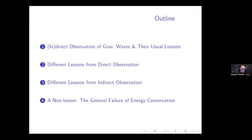Roughly speaking, direct detection involves an interaction between a gravitational wave and a detector on Earth, whereas indirect detection or observation only involves measurement of a common cause of gravitational waves and some phenomena we observe on Earth. I'm going to draw different sorts of lessons from both of these sorts of cases. There are also some folks who have drawn lessons about the nature of energy from gravitational waves, but I think some of these lessons go a bit too far.